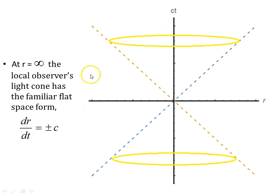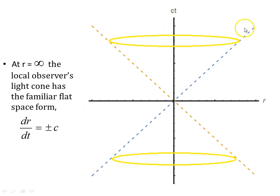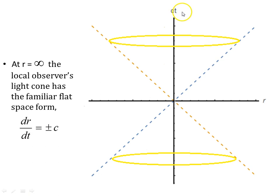To remind ourselves: in flat space, and also in the Schwarzschild geometry at r equals infinity, the local observer's light cone has the familiar flat-space form of Minkowski space. Here dr/dt is plus or minus c depending on the ingoing or outgoing light ray, giving the nice diagonal lines familiar from special relativity. The axes are in units of meters and ct also in units of meters.